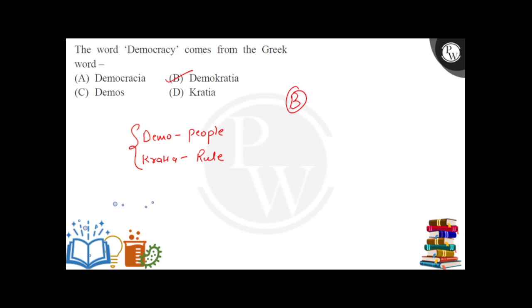So, this word democracy is derived from the Greek word demokratia. The correct option is option number B. I hope you understood the question as well as the answer. Best of luck.